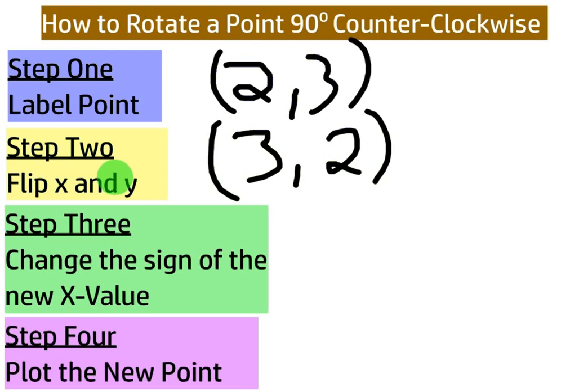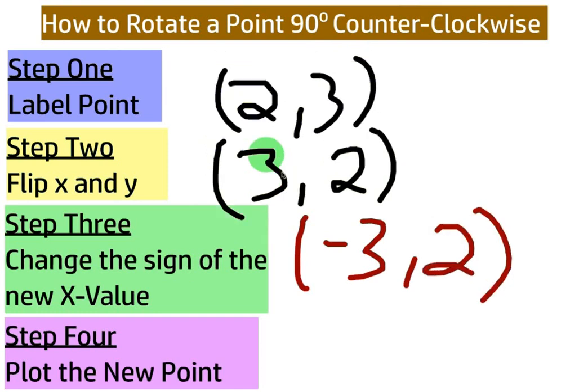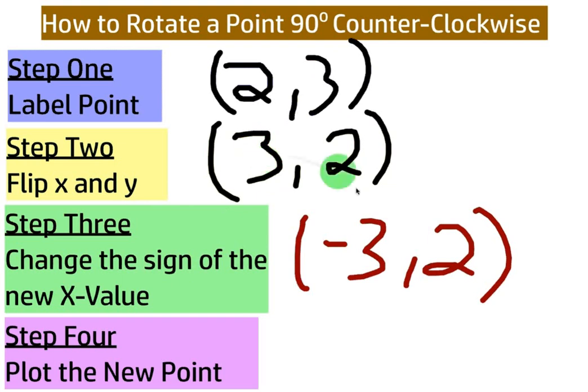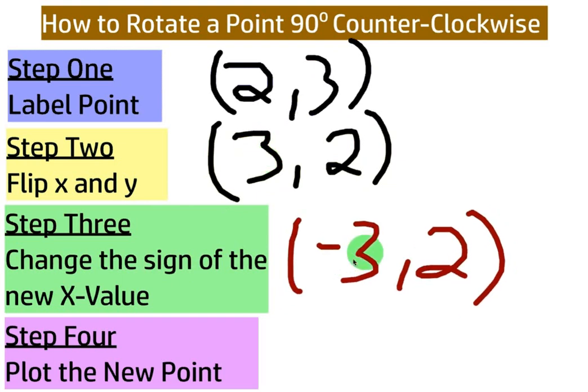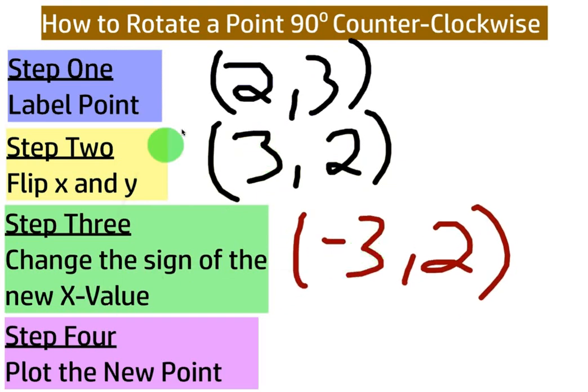The difference now, since we are rotating counterclockwise, is we're going to make our y value negative. Sorry, x value negative, excuse me. Change the sign of the new x value. So this new x value is going to become negative if it's positive and positive if it's already negative. Okay, so since this x value is positive, I'm going to make it negative and change the sign of the new x value after I flip this point.